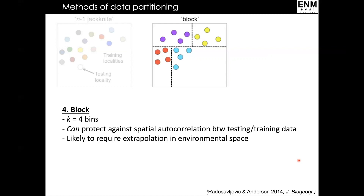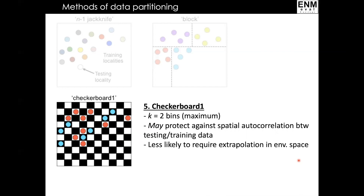Then we have three spatial methods of data partitioning designed to help reduce spatial autocorrelation between testing and training data. The first is called the Block method, which separates points into four bins designed to have an equal number of records in each bin as close as possible. This method can help reduce spatial autocorrelation, but that should be examined explicitly by the user. This method is also likely to require extrapolation in environmental space when testing the model, which may or may not be desirable.